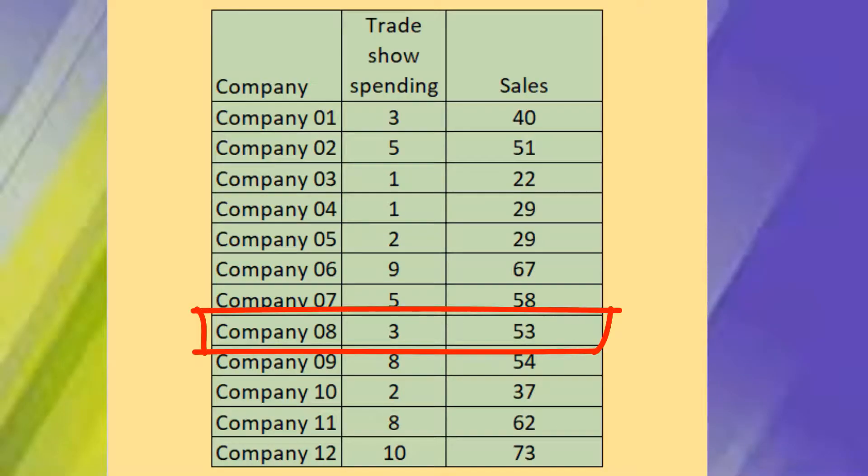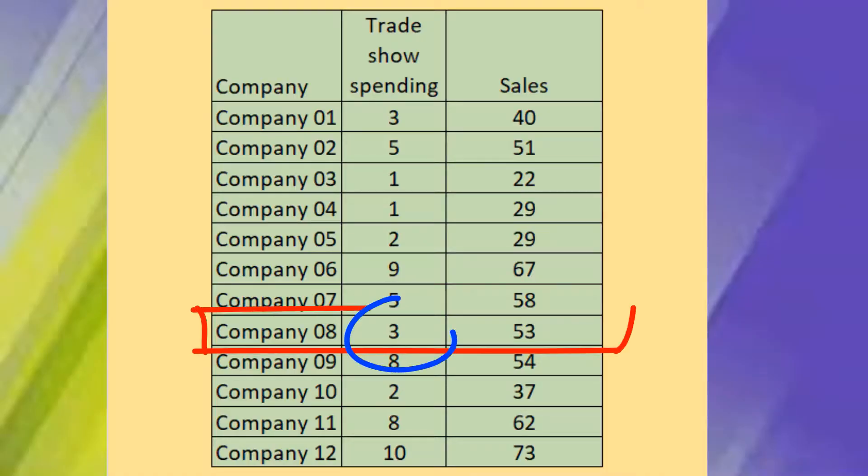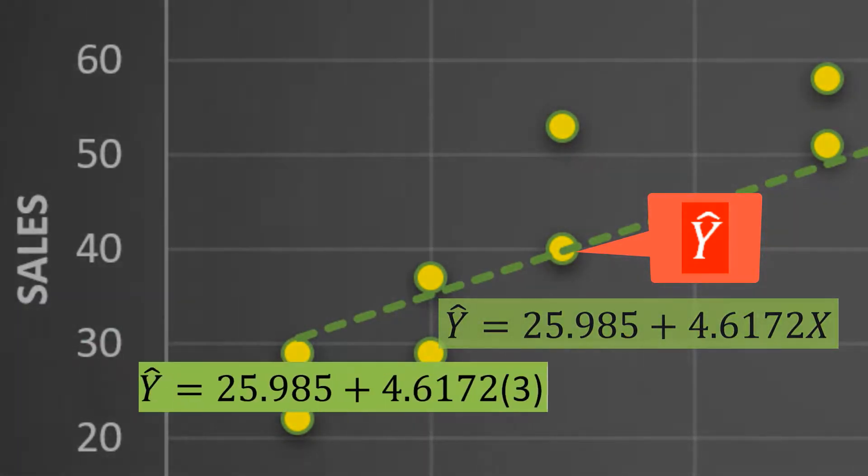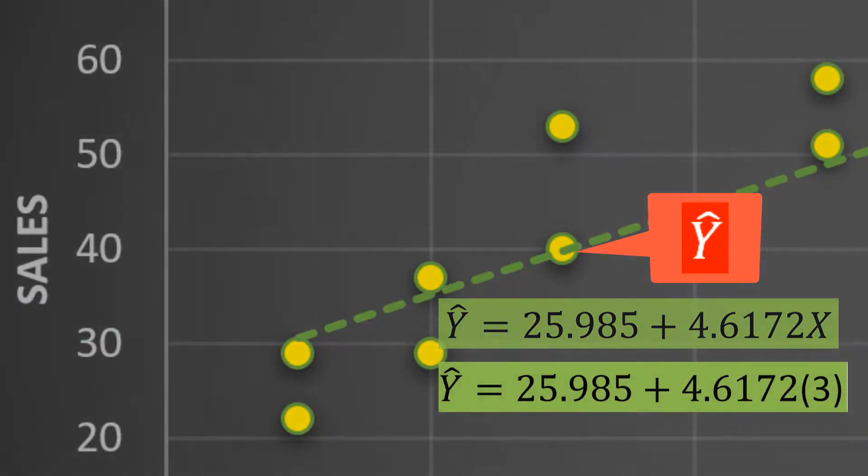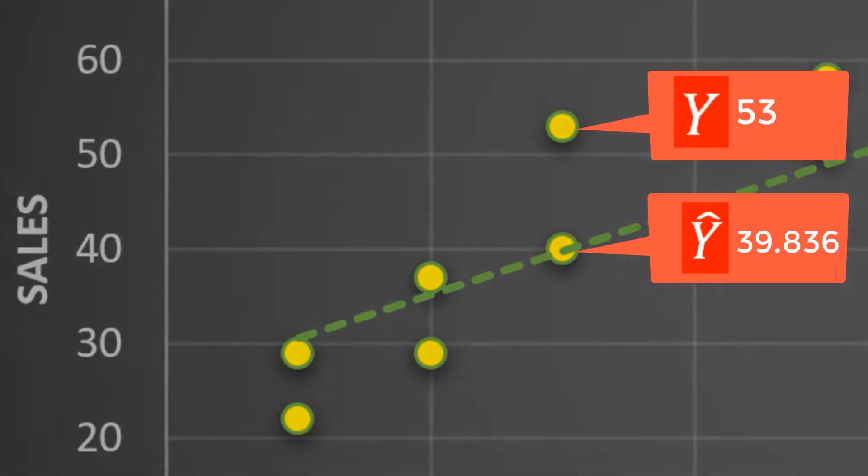Looking at Company 0.8, its actual value of y is 53. In Scatterplot, it is plotted here. Using value of x of 3, its predicted value y hat, using the regression model, is computed as 25.95 plus 4.6172 times 3, which equals 39.836. The difference of around 13 is the residual.